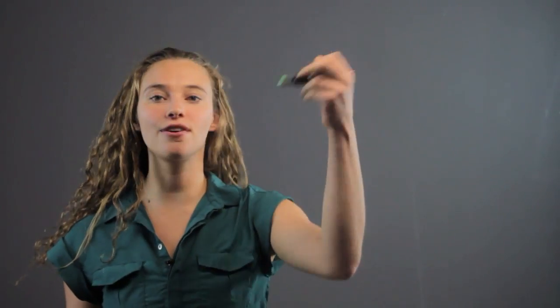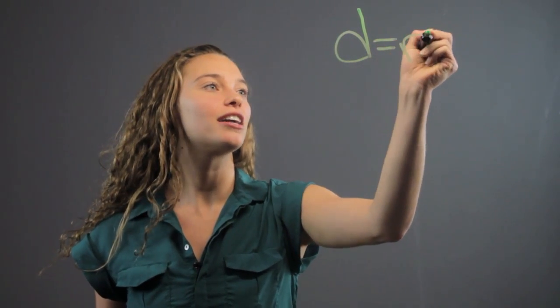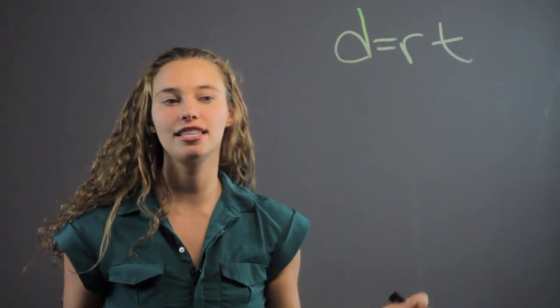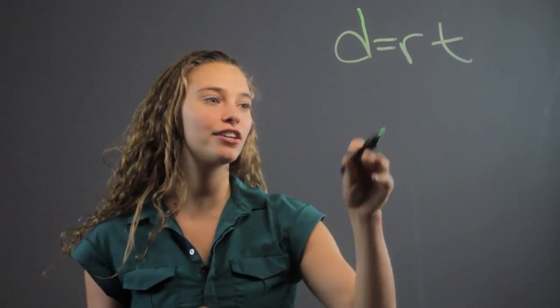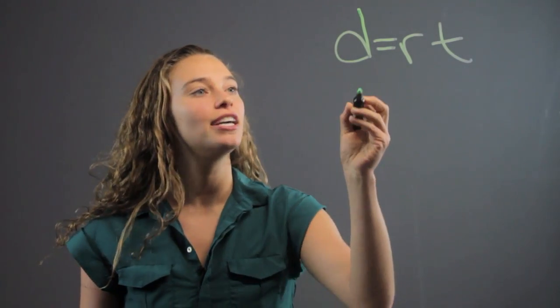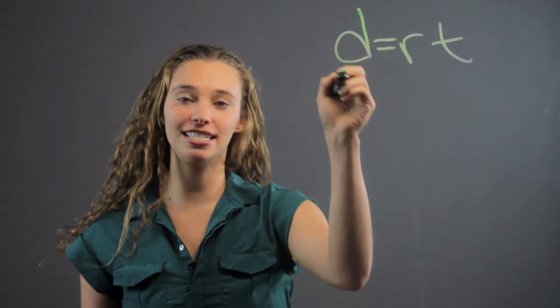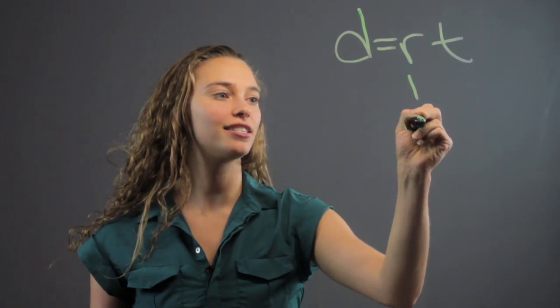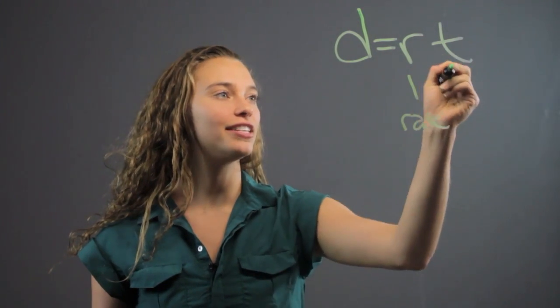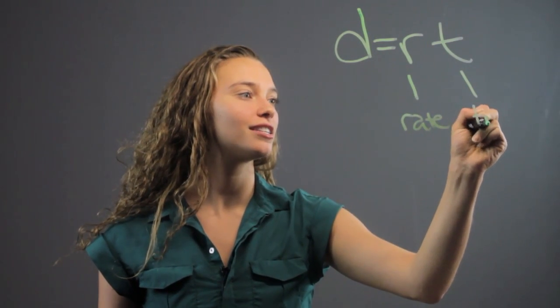We can write an equation for distance that can be graphed as a line on a graph, so let's look at that. D equals RT. This is the most common, most simple equation for distance that we learn generally around 8th grade. Now, D here represents distance, the R represents the rate, and the T represents time.